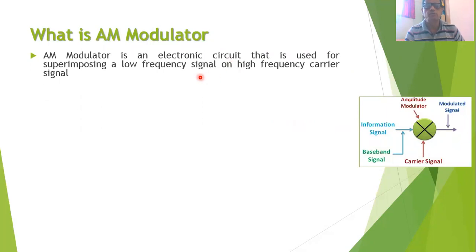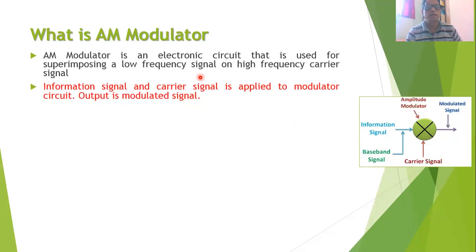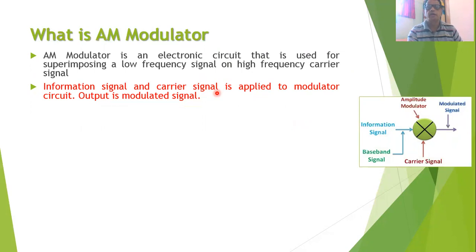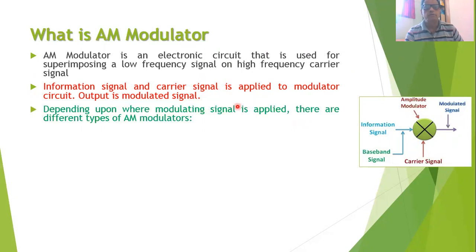A modulator is an electronic circuit that is used for superimposing a low frequency signal on the high frequency carrier signal. The information signal and the carrier signal are both applied to the modulator circuit, and the output will be the modulated signal.